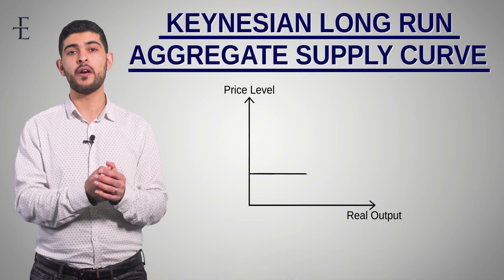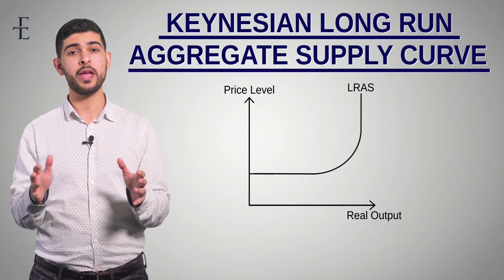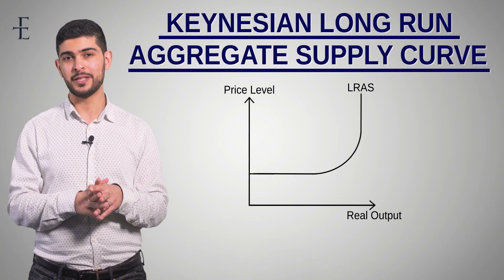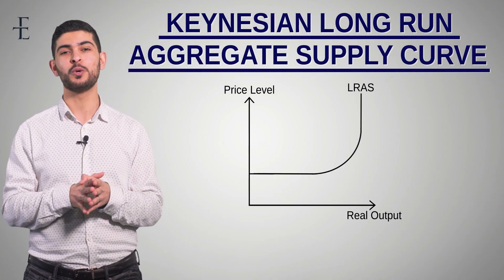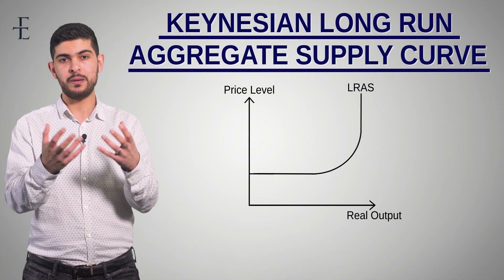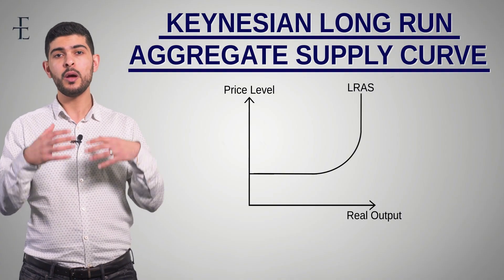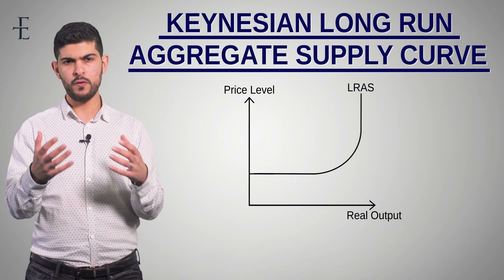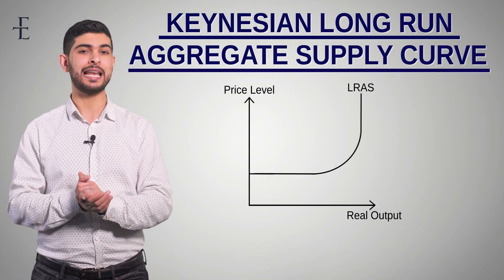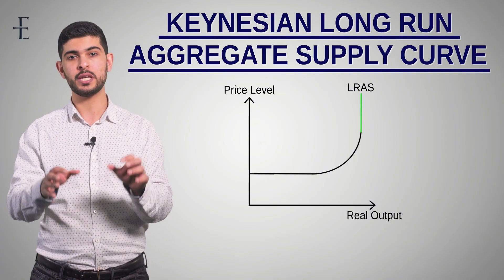The first thing we'll do is draw the LRAS curve. The LRAS curve is actually a curve you have seen drawn in a different way before. The first diagram you ever saw in economics is actually a PPF, because a PPF maps out the maximum level of output that our economy is currently capable of producing with all the factors of production at its disposal. Looking at our LRAS curve, the point where it becomes perfectly inelastic represents the maximum level of output that your economy is capable of producing at this moment in time.